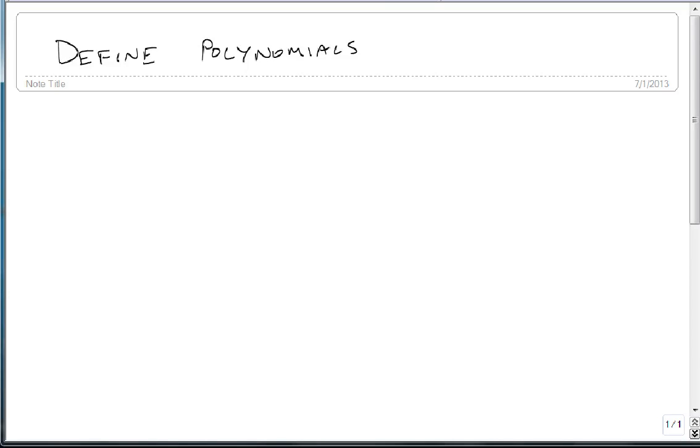We are now going to define polynomials. To start with, we're going to start with terms. A term is a number or a variable, or a number and a variable that may or may not have a power on the variable, such as minus w cubed. These are things that get added together.